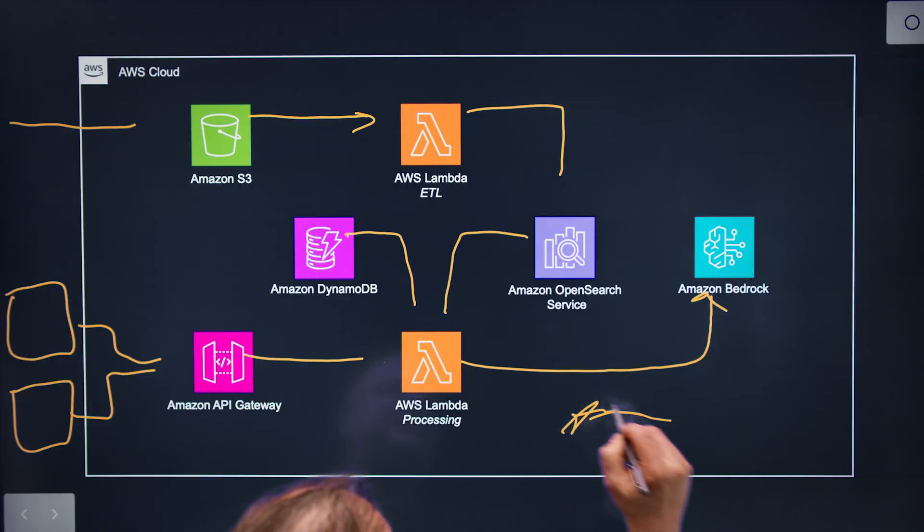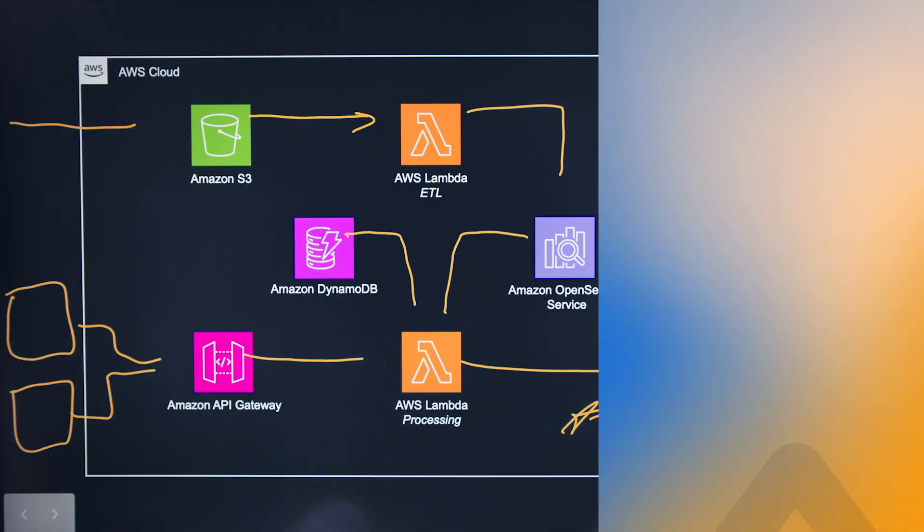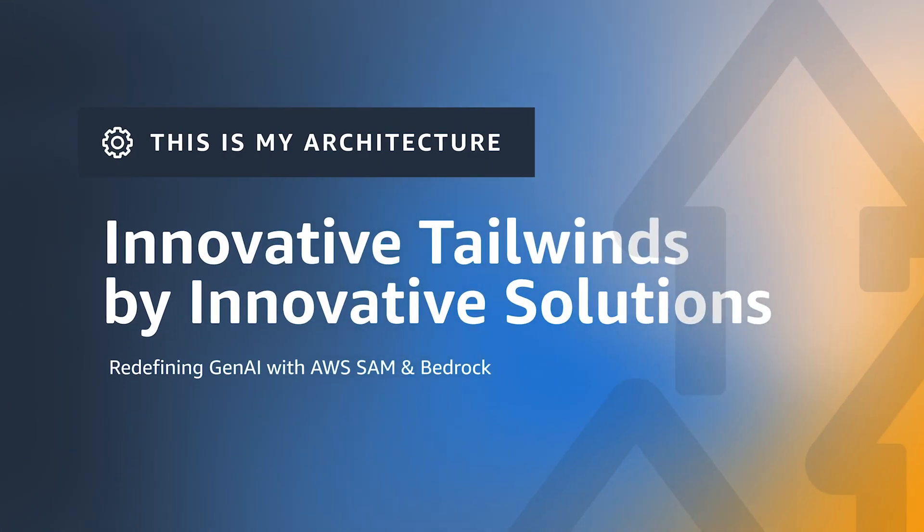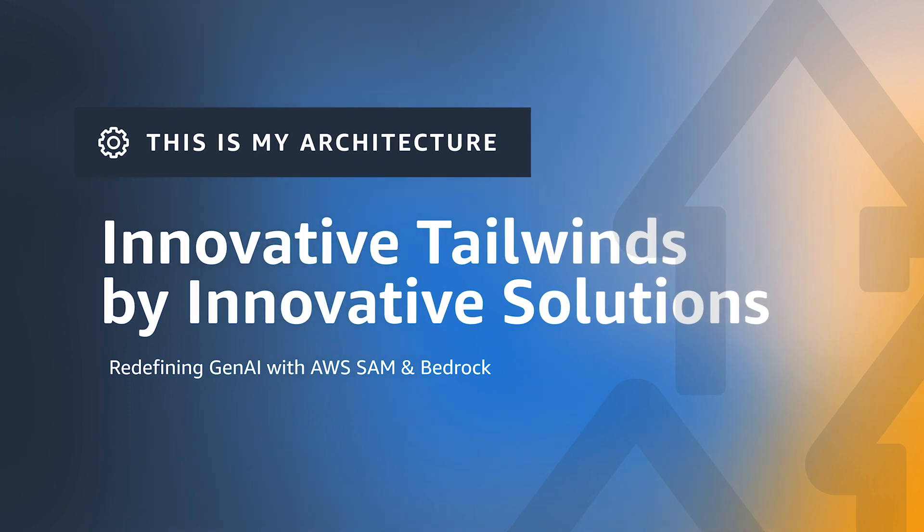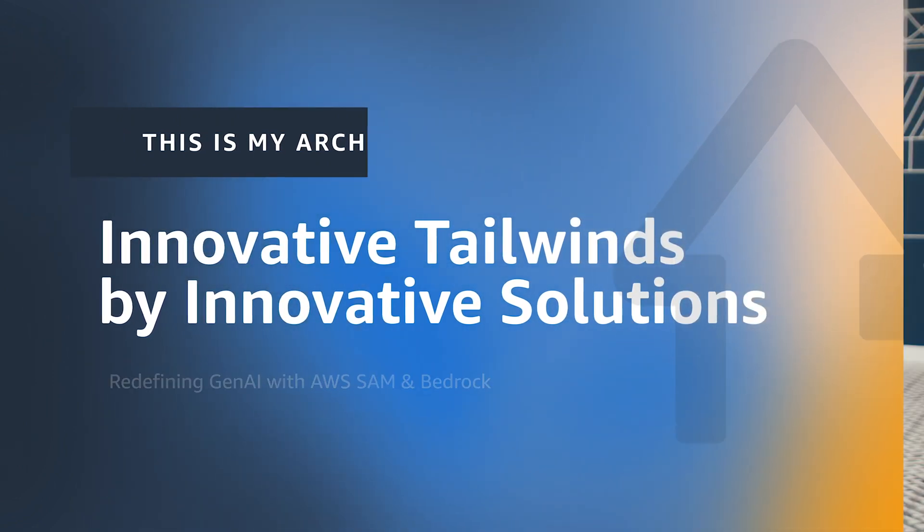Hi, I'm Josh from AWS. And I'm John from Innovative Solutions, and this is My Architecture. So John, Innovative Solutions builds a variety of solutions as an AWS Premier Partner for customers looking to adopt Gen AI. Can you tell me a little bit about what you built here?